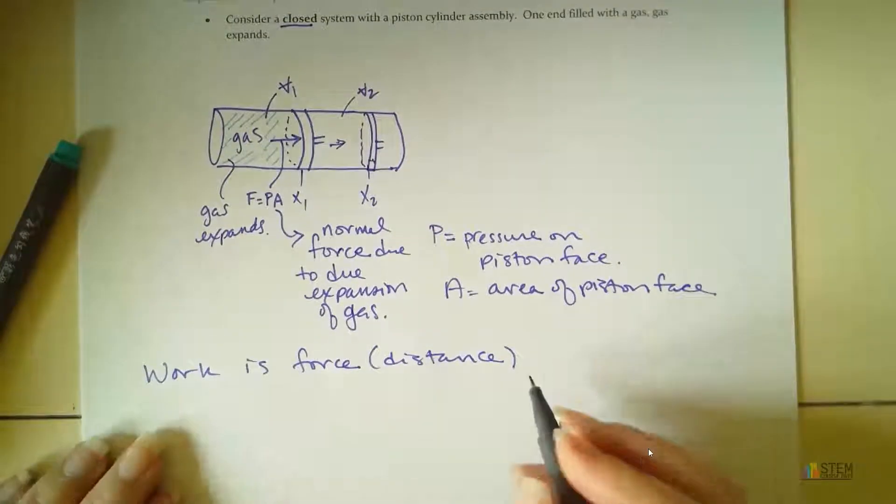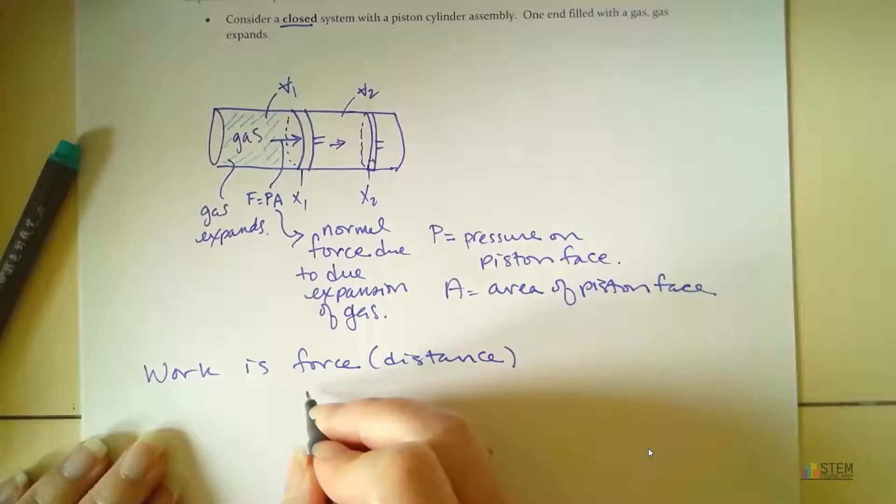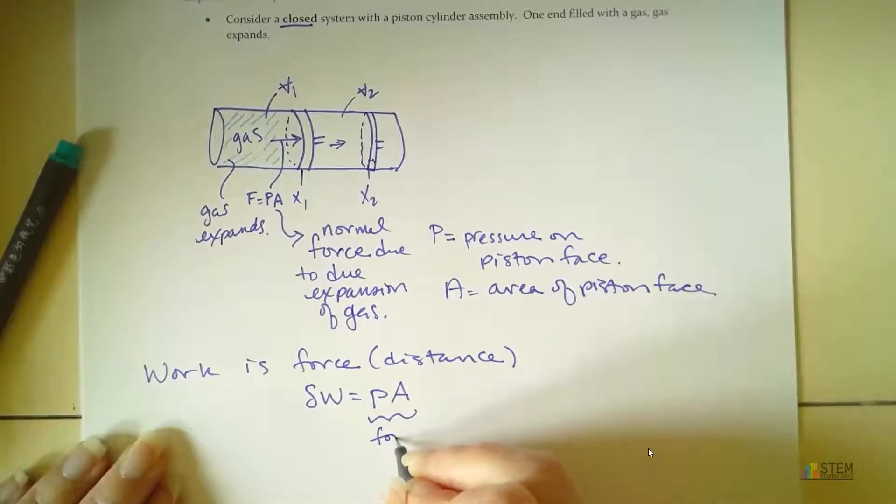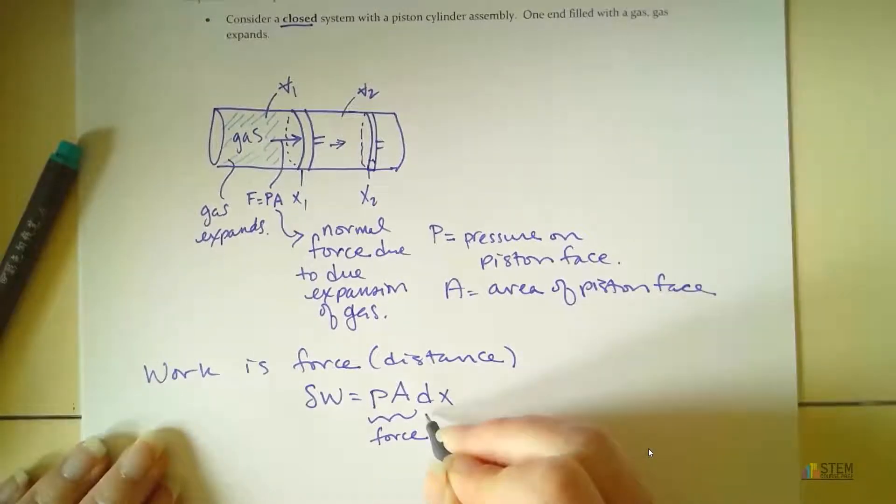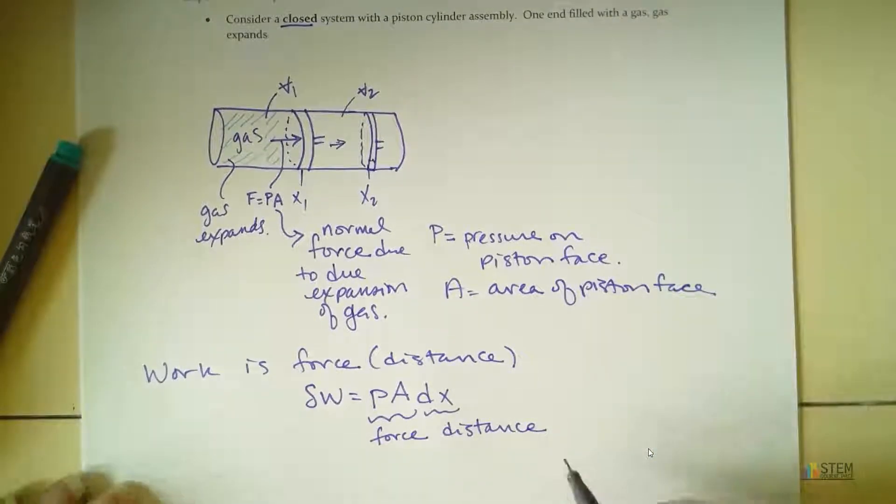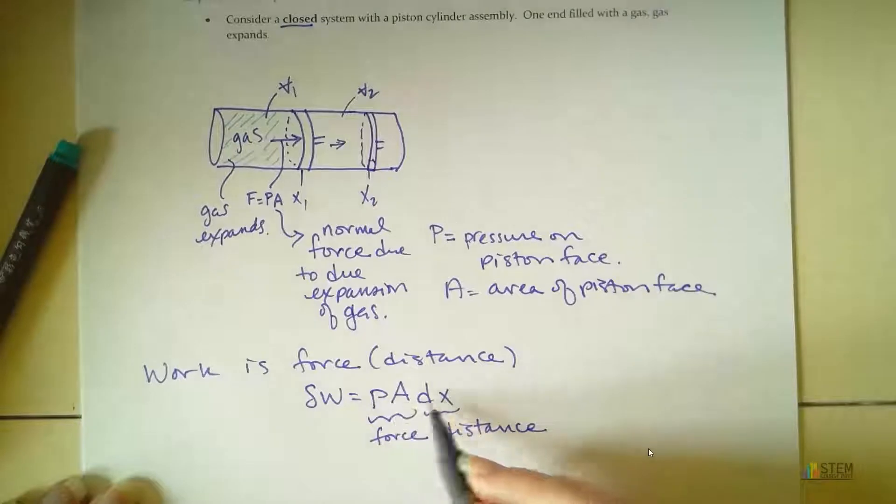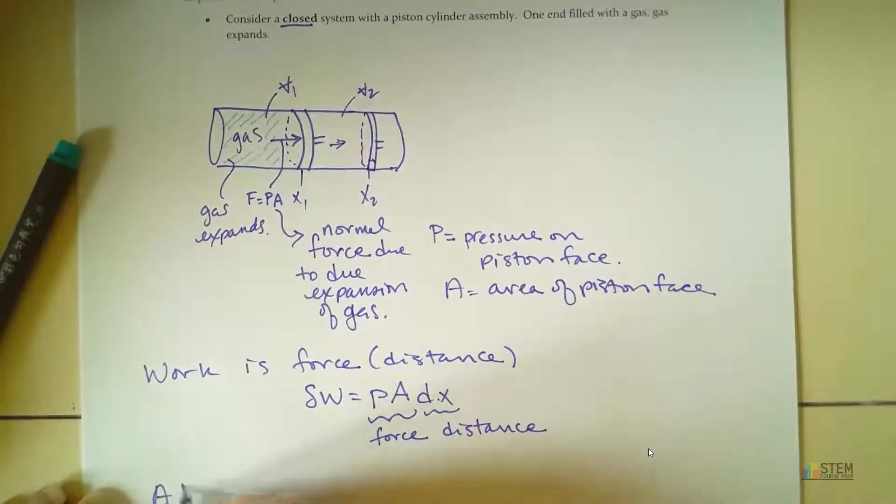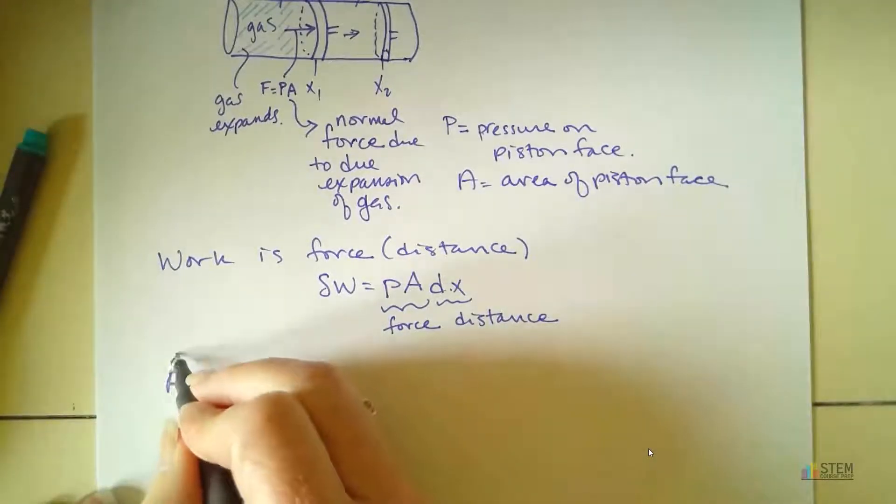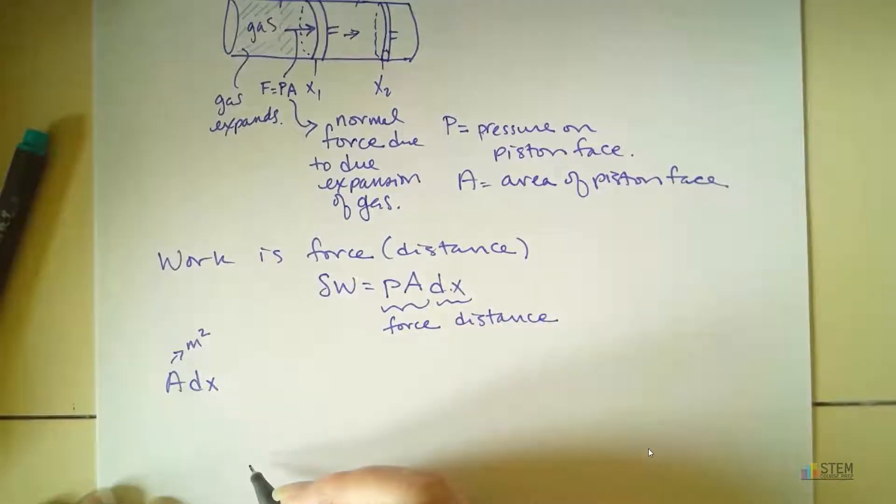Okay. Now the equation we're going to use is we're going to have delta work equals P times A. So this is pressure times area. So this is force times DX. So this will be distance. Now we have that. Now if you look at this equation, we've got an area times DX. So let's look at that product. Now if we just think about the units. Area units will be meters squared. If we're in the SI system.